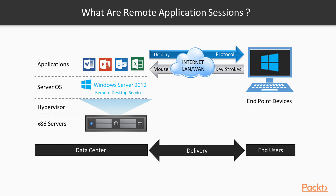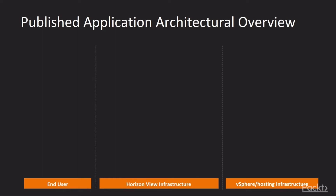So why use this model over VDI? A use case could be a call center worker who just uses a couple of different applications — it's far easier from a management perspective to just give them the applications they require rather than a full-blown virtual desktop. Another use case is the ability to launch applications using the Horizon client on a device that wouldn't normally be able to run that application. For example, you could run the real version of Microsoft Word on your iPad using the Horizon client for iOS and the published version of Word.